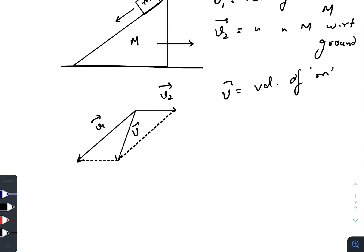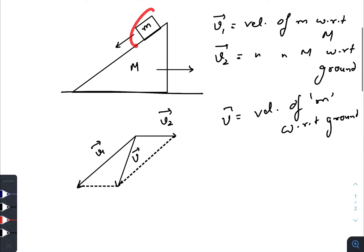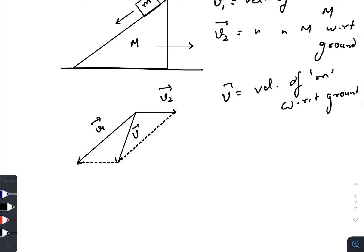Basically they wanted to say that the resultant of these two vectors v1 and v2 is the velocity of m with respect to ground. So basically these two vectors creates this vector because for a person standing on the ground, the mass is moving in this way along with some velocity in the horizontal direction. This will be the resultant velocity. According to the question, this angle is 30 degrees and this angle is 60 degrees.